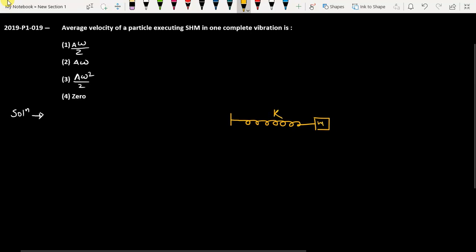And mass is M. Now if you talk about SHM, if you compress it, this is one extremity and this is the other extremity. This distance is the amplitude A, and this distance is also the amplitude A. One complete vibration means what? Let's say the particle starts at the mean position.